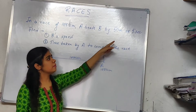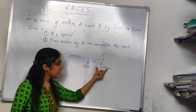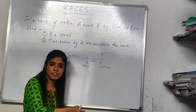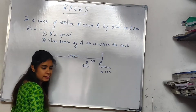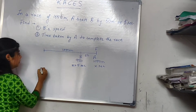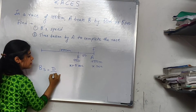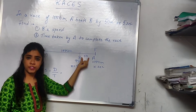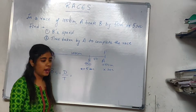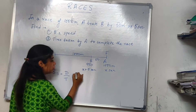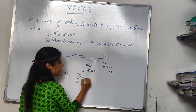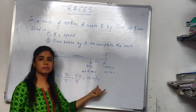We also know A beats B by 5 seconds. That means when A reached the final destination, B took 5 seconds more to reach it. So if A took X seconds to finish the race, B took X plus 5 seconds. So B's speed equals distance upon time — B is going to cover 50 meters in 5 seconds. So the speed of B is 10 meters per second.